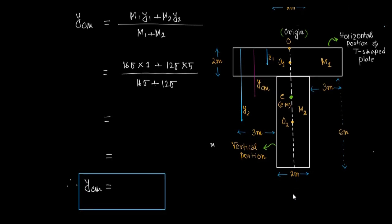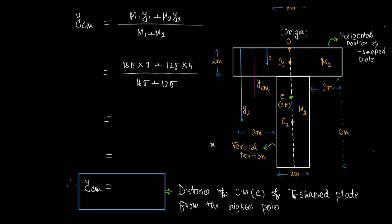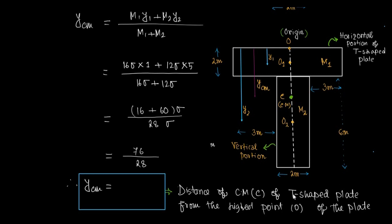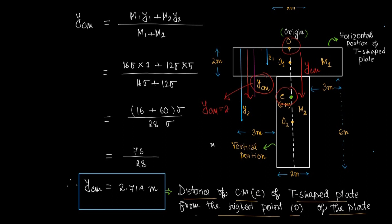The distance ycm is the distance of center of mass C of the T-shaped plate from the origin — the highest point O. Calculating: (16 + 60) × sigma divided by 28σ gives 76 divided by 28. Therefore ycm equals 2.714 meters, which is the distance of the center of mass C from the highest point O of the plate.